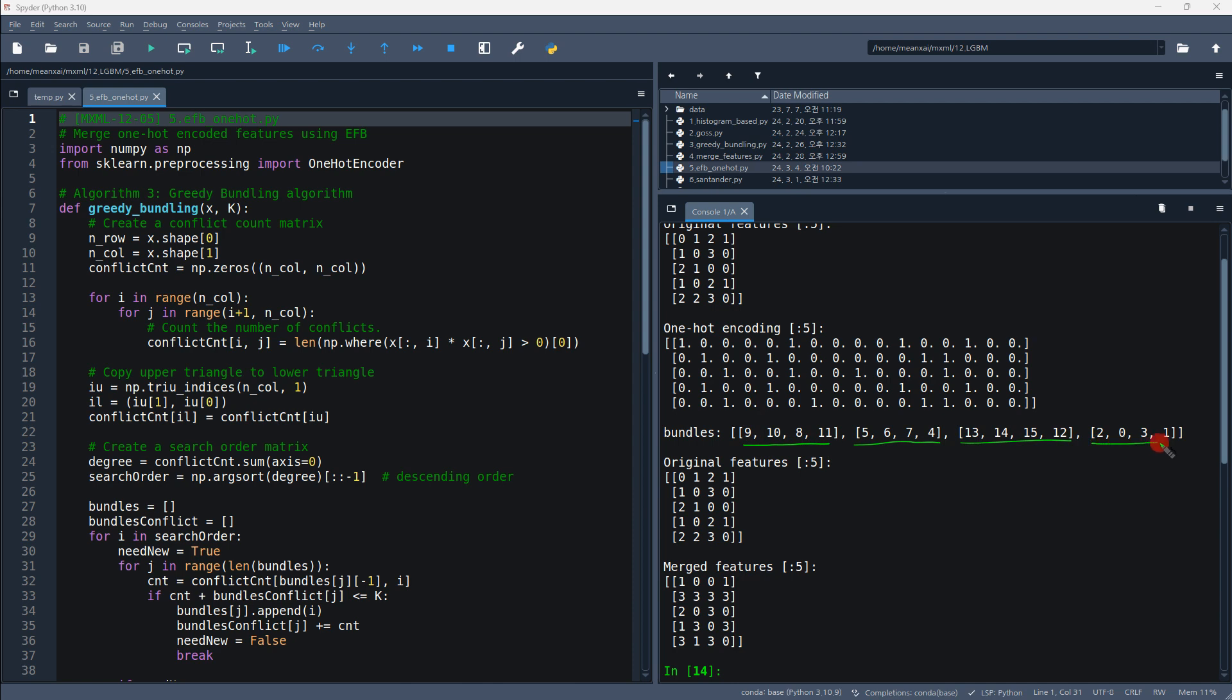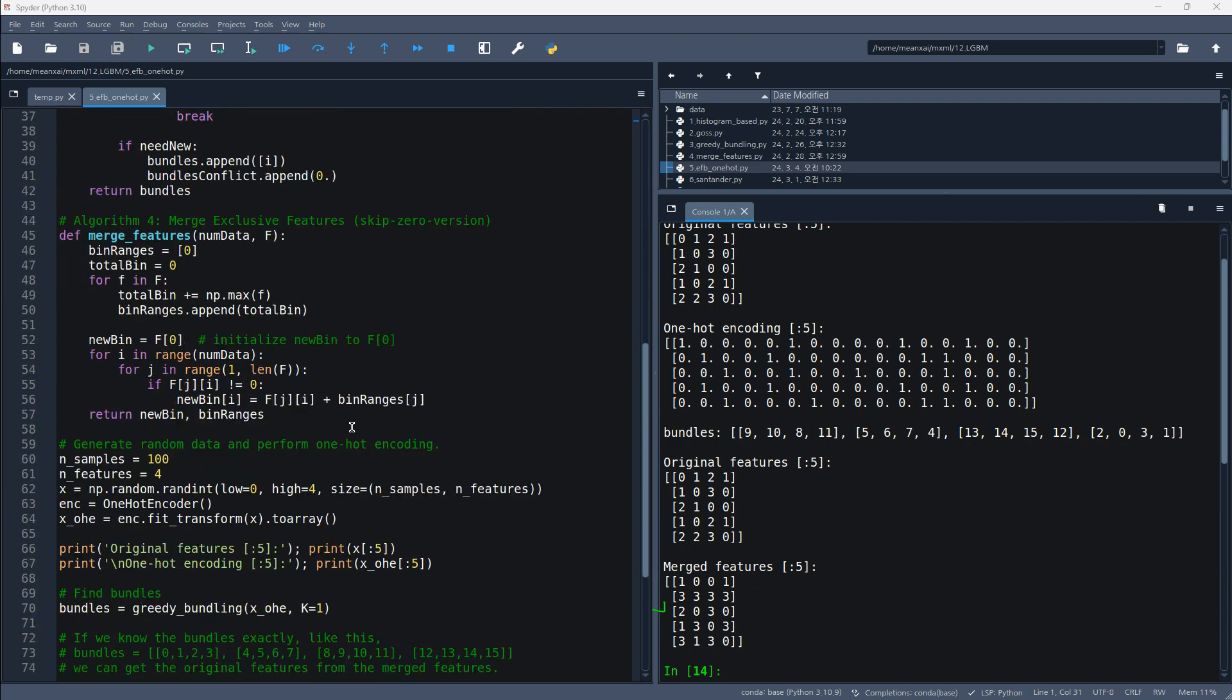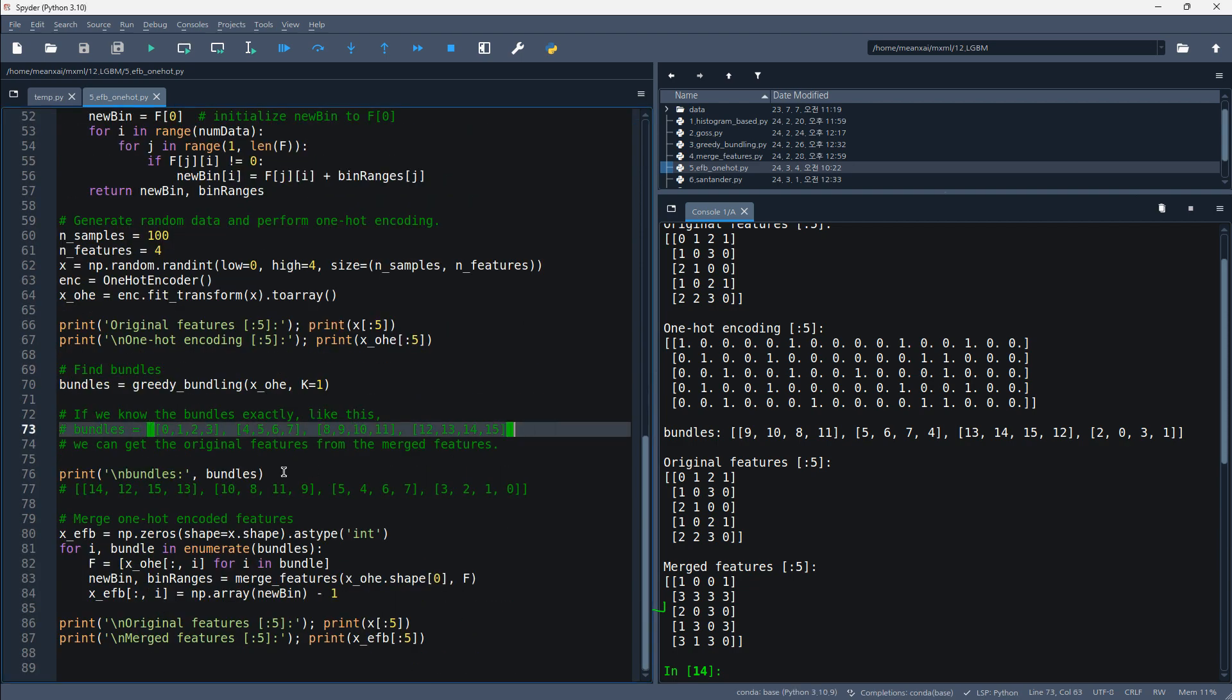And the one-hot encoded features are merged as follows. It did not match the original features. If the greedy bundling algorithm correctly finds the bundles list like this, you can see that the merged features and the original features match well.